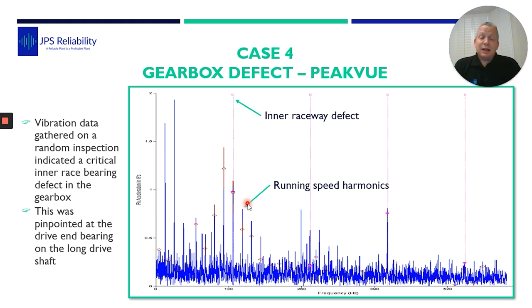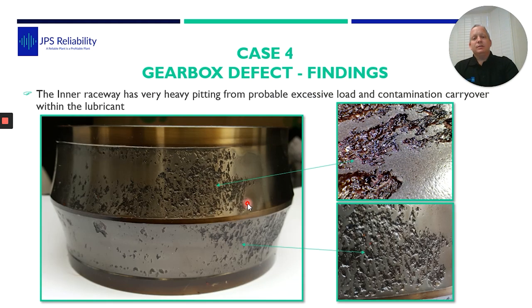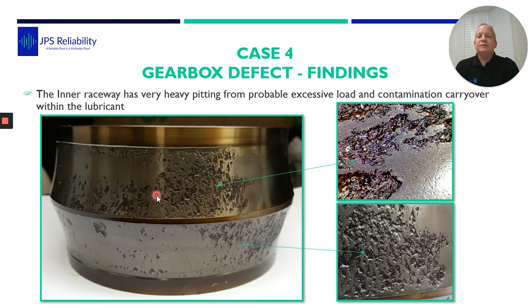Due to those findings, the classification was very urgent — they needed to schedule the gearbox removal before it gave short notice and functionally failed. Luckily they did remove the gearbox before it failed and affected system functionality.